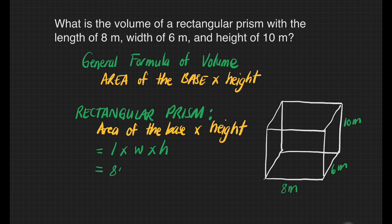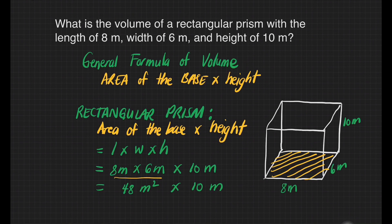That's 8 meters times 6 meters, then multiply by its height, which is 10 meters. 8 times 6 equals 48 meters squared. Then just multiply it by height, which is 10 meters, will give us 480 cubic meters. And that's so simple.